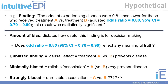If our finding is unbiased, then we've estimated the causal effect of the treatment on the outcome — in this case, we could say that treatment A versus B does in fact prevent disease. If we were able to estimate a minimally biased finding, then we have what could be referred to as a reliable association, in that treatment A versus B may prevent disease. In a strongly biased setting, we have an unreliable association, where we really do not know what is going on with respect to treatment A and B and their effect on disease.